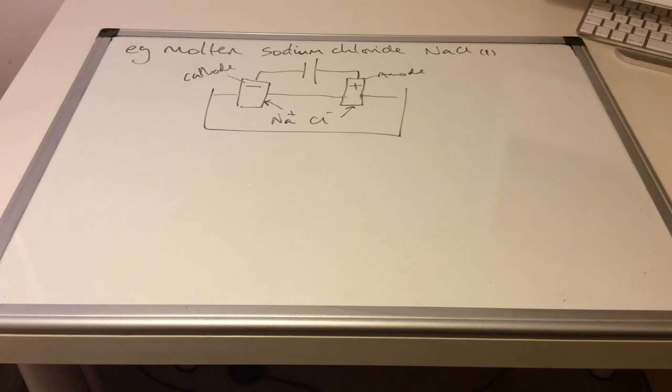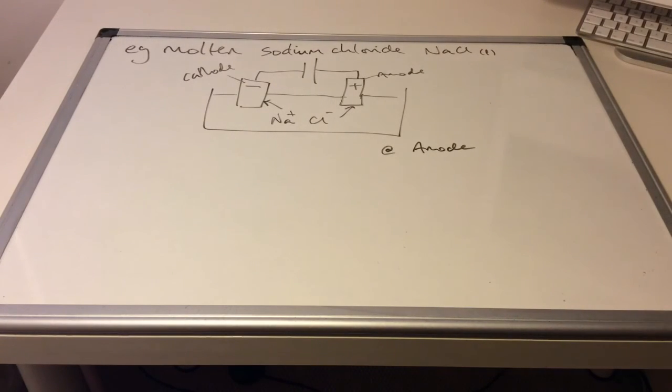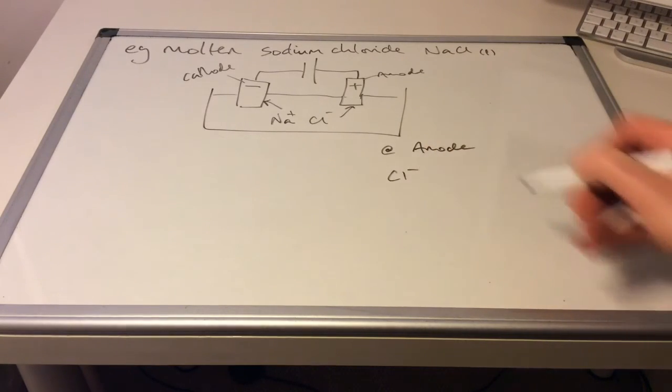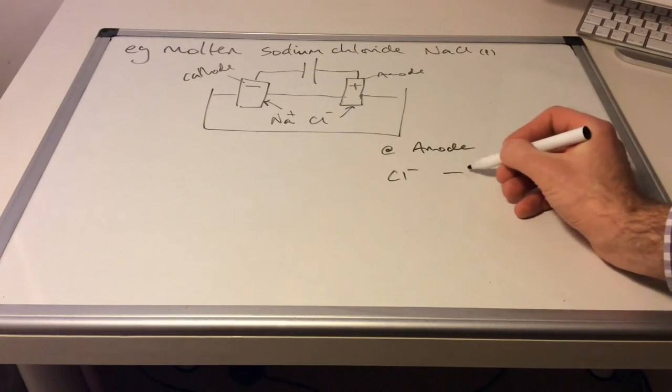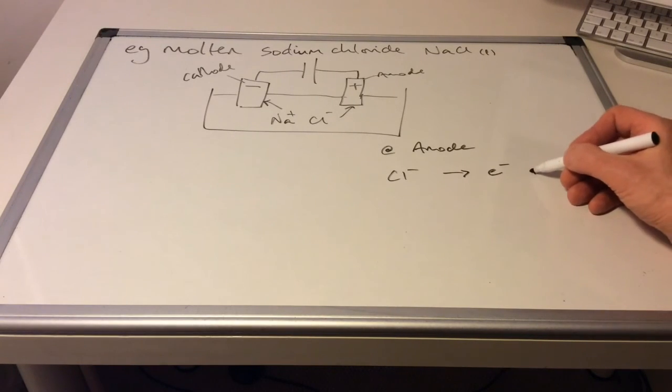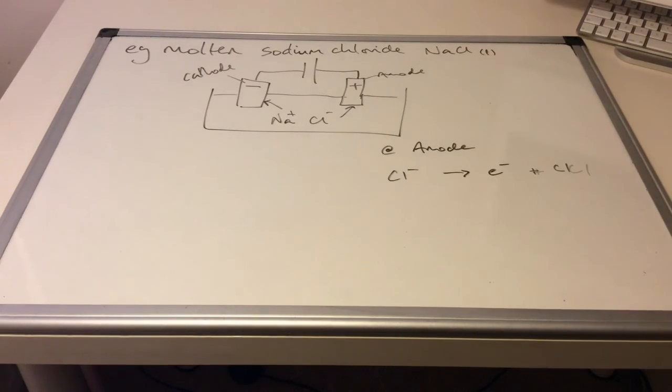Because opposite charges attract. So what's going to happen at the anode. This chloride ion is going to arrive there. And it's going to give up its electron. So there it is on the other side of the arrow. What will it become? A chlorine atom.